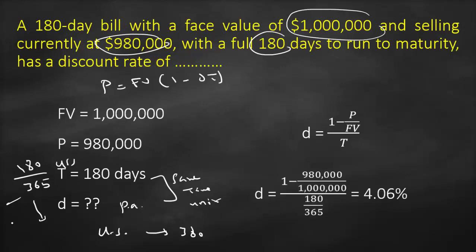So here I will get 1 minus 980,000 divided by 1 million, all of this divided by 180 divided by 365. This will give us a discount rate of 4.06 percent.